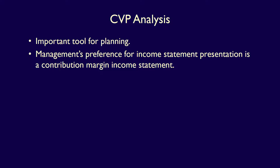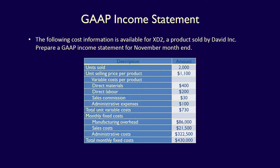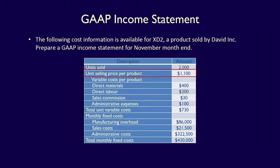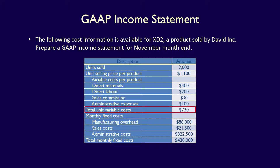The easiest way to understand this is if we first produce a standard GAAP income statement. We can then use the same information to produce a contribution margin income statement and compare the two. David Inc. has the following information available for their product XD2 for the month of November. Units sold: 2,000. Selling price per unit: $1,100. Per unit variable costs: direct material $400, direct labor $200, sales commission $30, and administrative expenses $100. The total variable cost per unit is therefore $730.